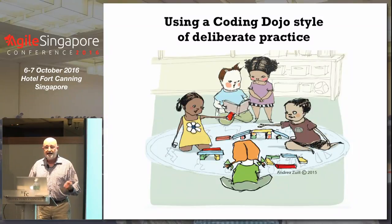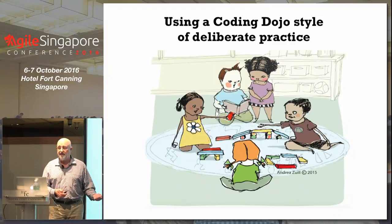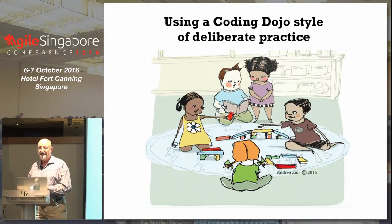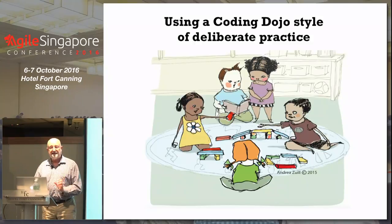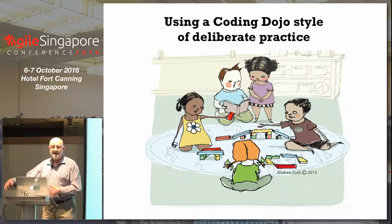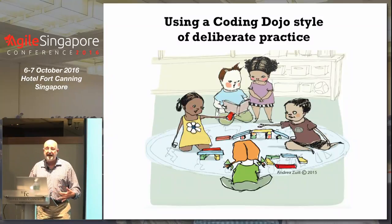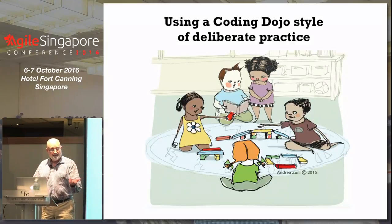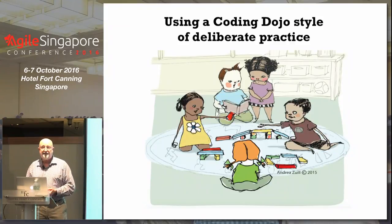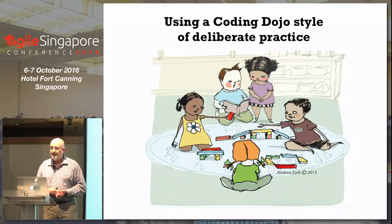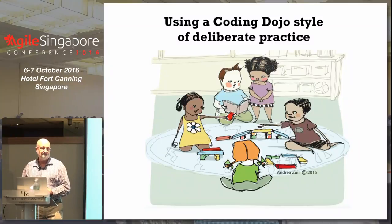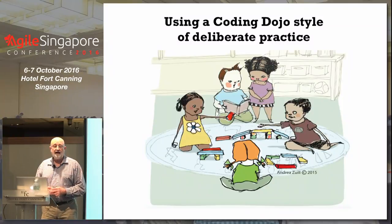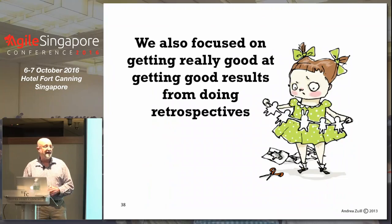We started meeting about once a week — Fridays for two to three hours — to do coding dojos. Everyone on the team was invited to participate but not required; it was voluntary. In the coding dojo, somebody at the keyboard is the driver, somebody next to them is the navigator, and everybody else observes and prepares to become a navigator. Every four minutes we would rotate. We'd been practicing this way for five or six months.